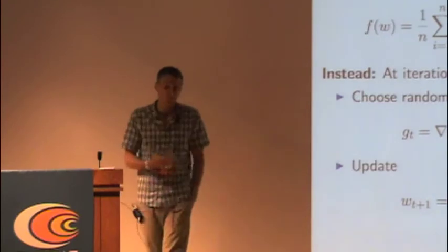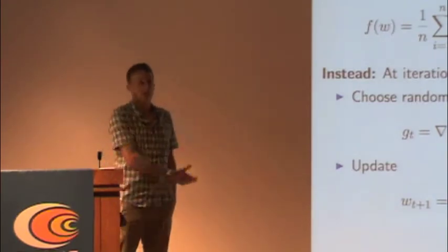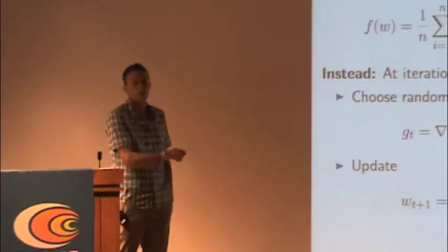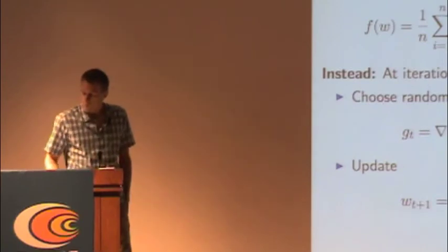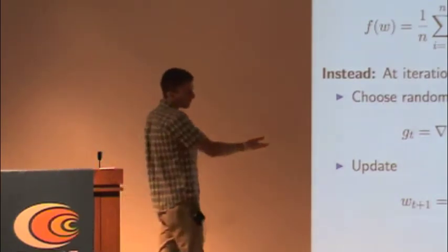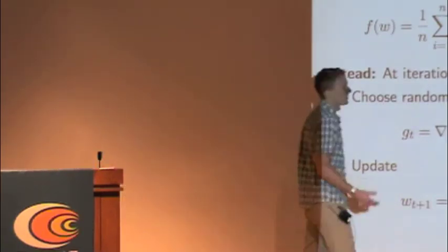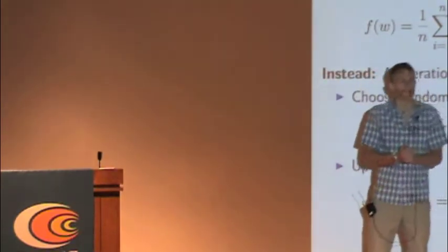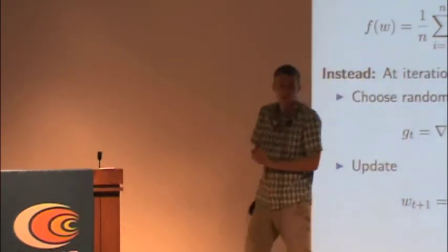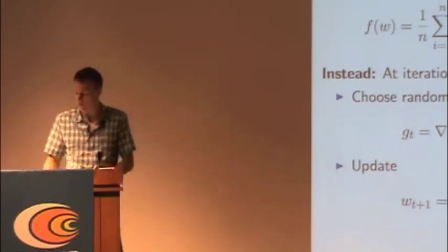Instead, what we do is we just choose a random example, we take the gradient with respect to that example, and go in that direction a little bit. So if these are the level sets of your function, you get some kind of behavior like this. You randomly jump around for a while, and eventually the noise averages out, and you go to the middle, go to the bottom of the function.